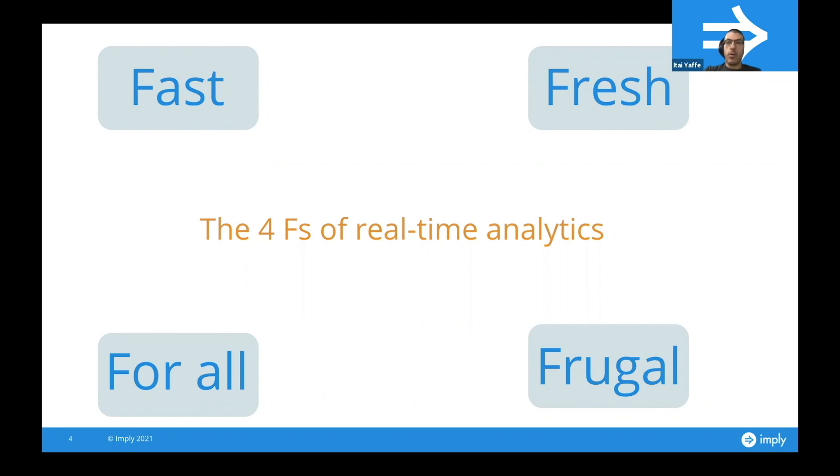So if we talk about Fast, first of all, Elasticsearch is not column-oriented at its core. So when it comes to fast analytics, the first method for achieving good performance is to limit how much data you actually scan in order to return the result. Now Elasticsearch does it through indices, that's true, but it's still row-based at its core.